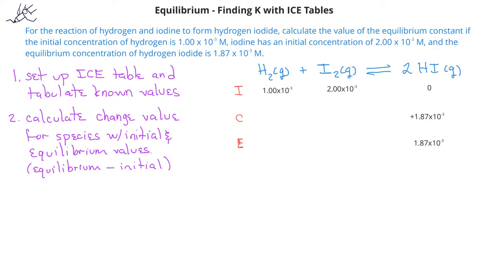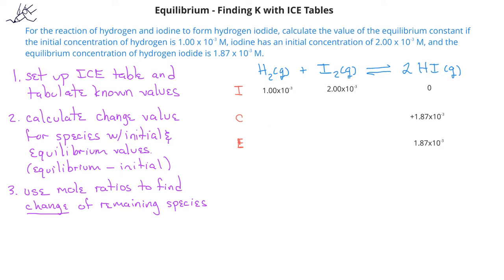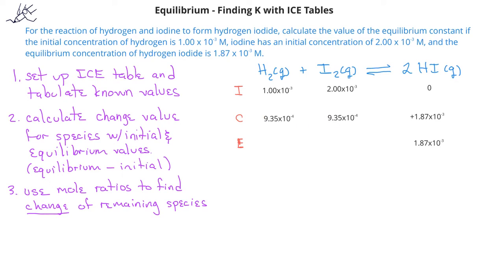Now that we know the change in hydrogen iodide concentration, we can use stoichiometry and the mole ratios of reactants and products to calculate the change in the iodine and hydrogen concentrations. Since hydrogen iodide has a 2-to-1 mole ratio with iodine, the change in iodine concentration is half of the hydrogen iodide change. Similarly, hydrogen also changes by half the amount. This gives change values for hydrogen and iodine of 9.35 × 10⁻⁴. Since both are reactants, that change is a decrease, so we put a negative sign for each reactant in the change row.